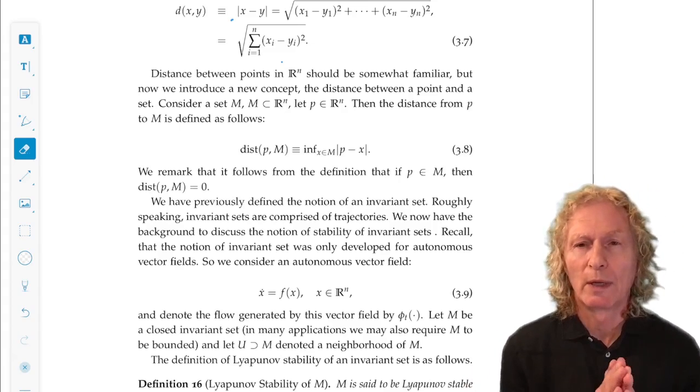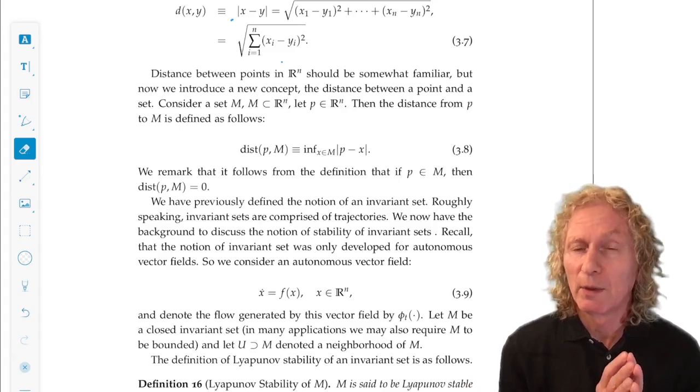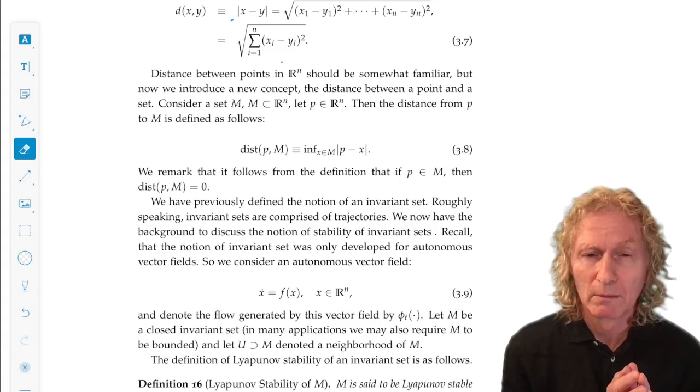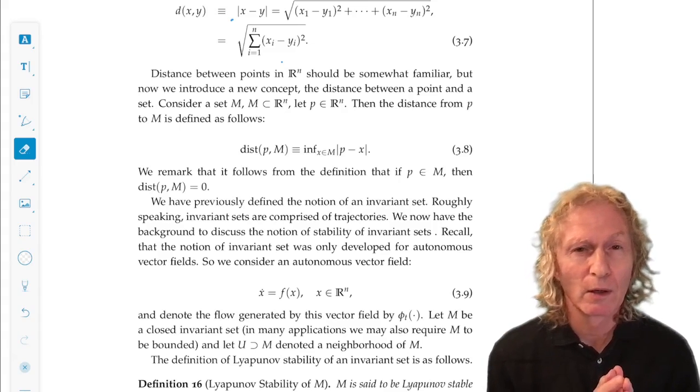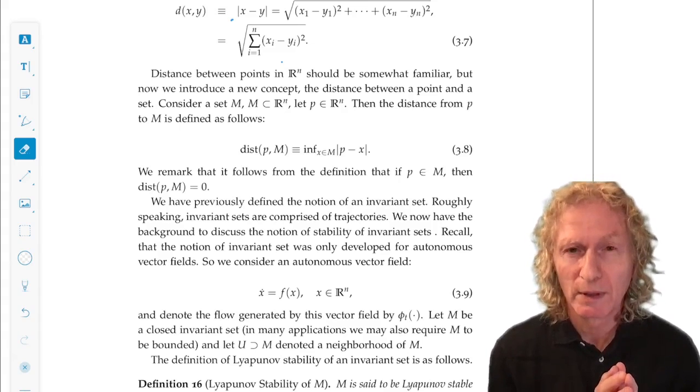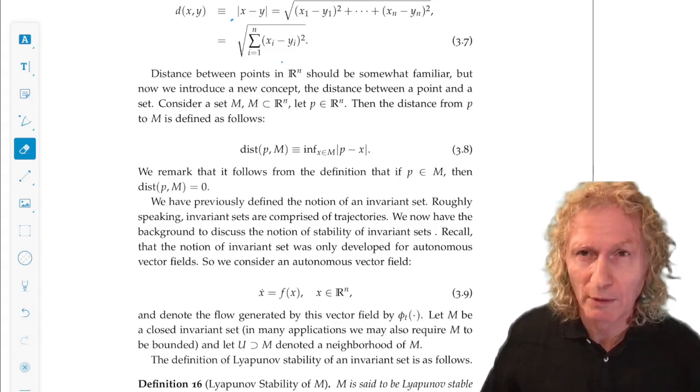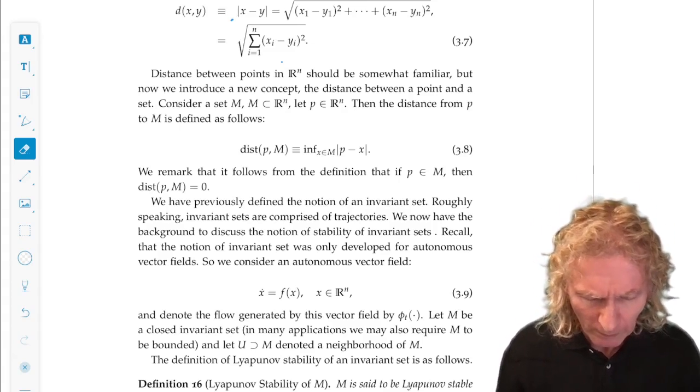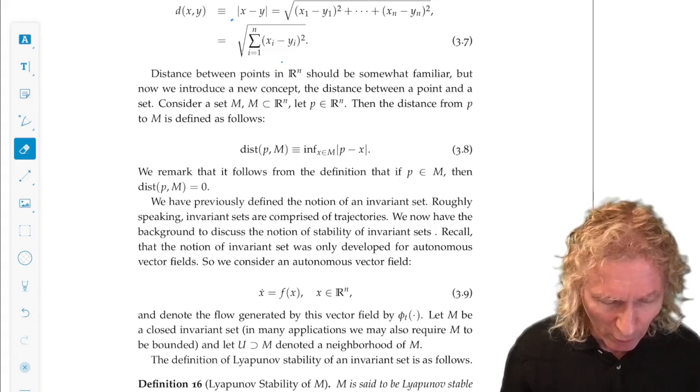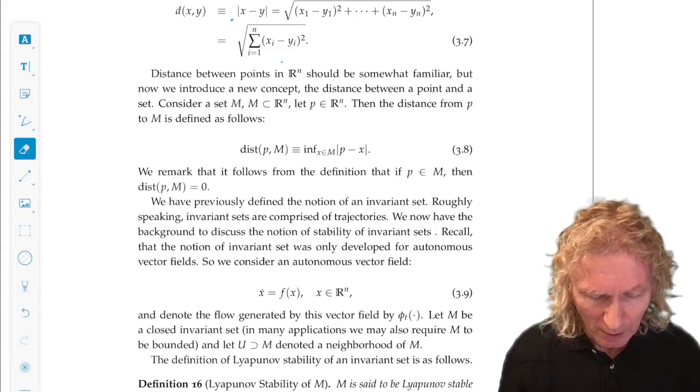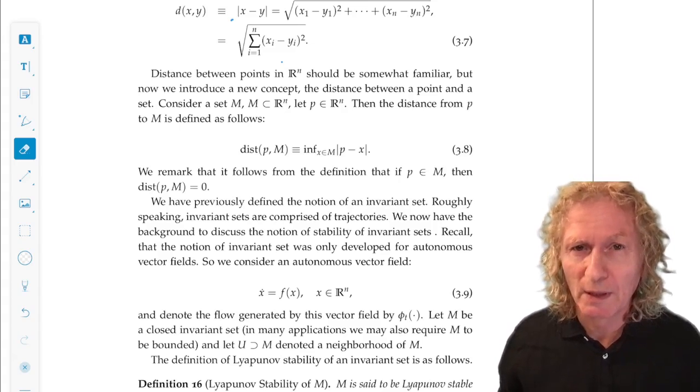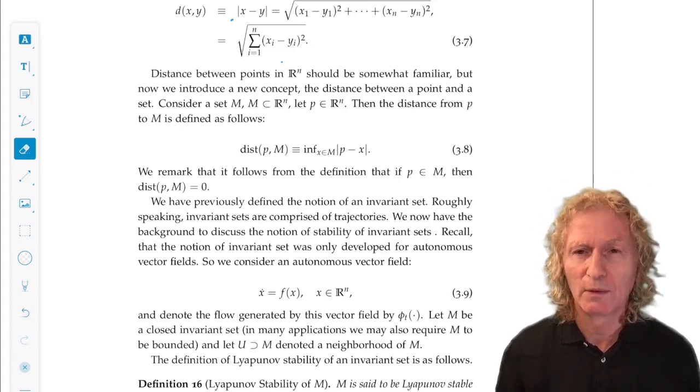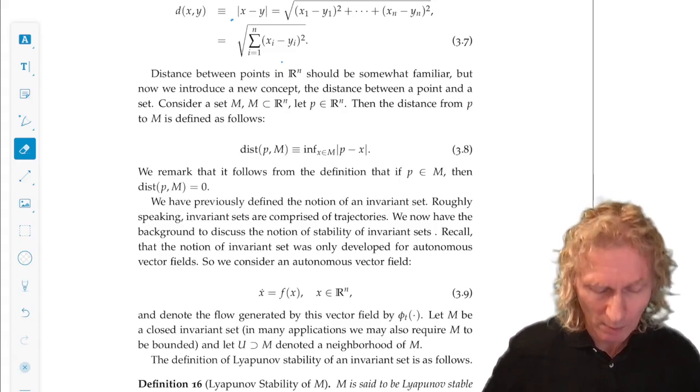So we have an attracting set. The basin of attraction is the set of all points that approach the attracting set, that are attracted to the set. Basin of attraction. The set of all points that approach it as T goes to infinity. Stability is an infinite time concept. Keep that in mind.